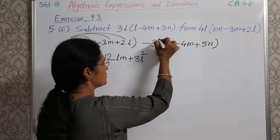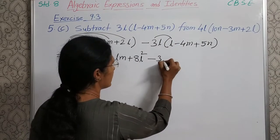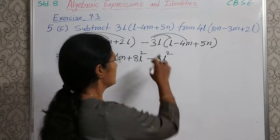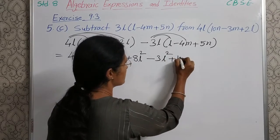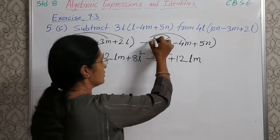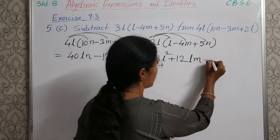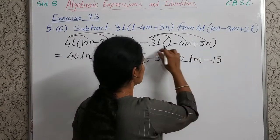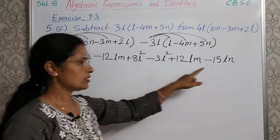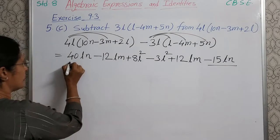Now solve this part. Minus 3L into L is minus 3L square. Next, minus 3L into minus 4M — minus minus — plus 12LM. Next, minus 3L into plus 5N — minus plus — minus 15LN. Now observe whether there are like terms. Here LN and here also LN — these are like terms. And LM and LM — these are also like terms.